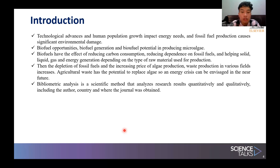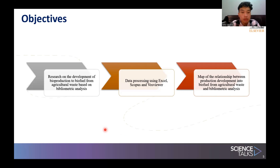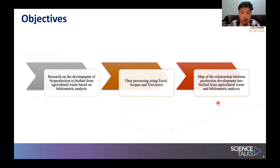The study of biofuel research spans from 1971 to 2023 with the aim of understanding the development of biofuel in the future. The objective is research on the development of bioproduction to biofuel from algae culture waste based on bibliometric analysis. The data obtained is associated with Excel, Scopus, and VOSviewer. From the processed data, it produces a map of the relationship between bioproduction development into biofuel from algae culture waste and bibliometric analysis.